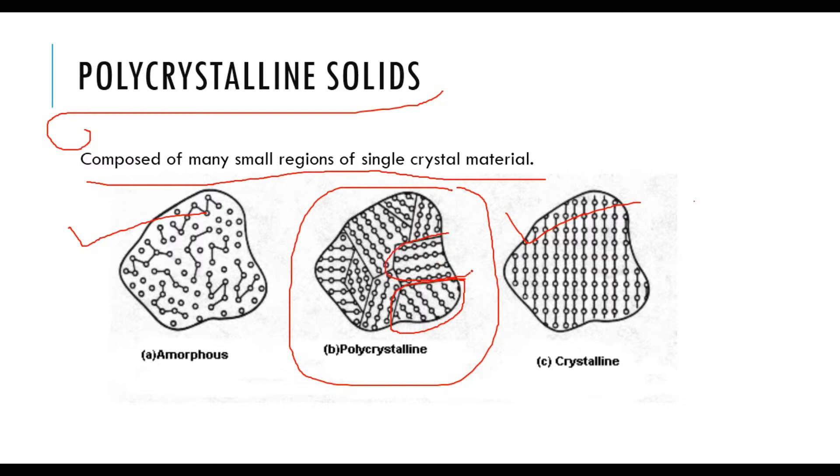This part is also crystalline in nature. But if we see these two parts in a combined way, then we can see that they are not crystalline in nature. So polycrystalline means the combination of different crystalline structures.